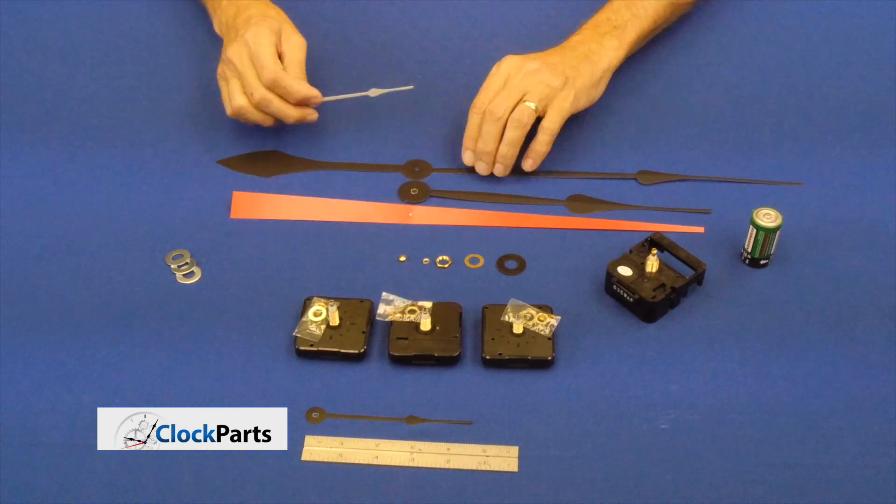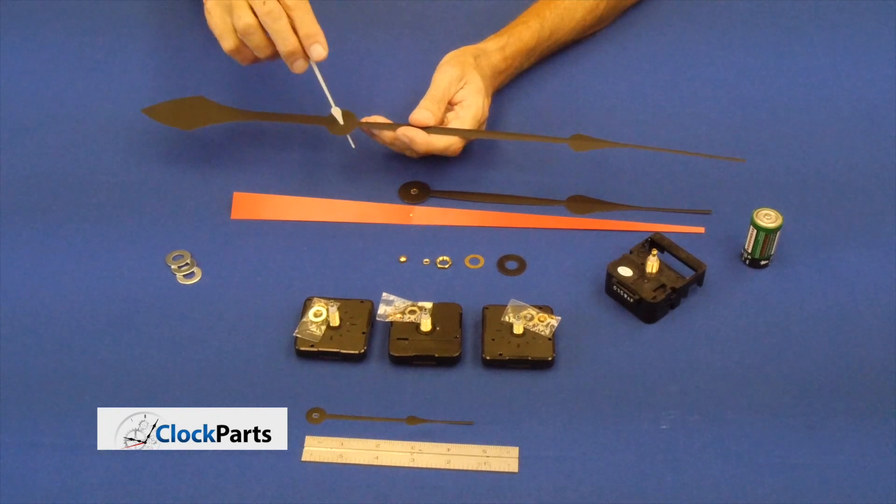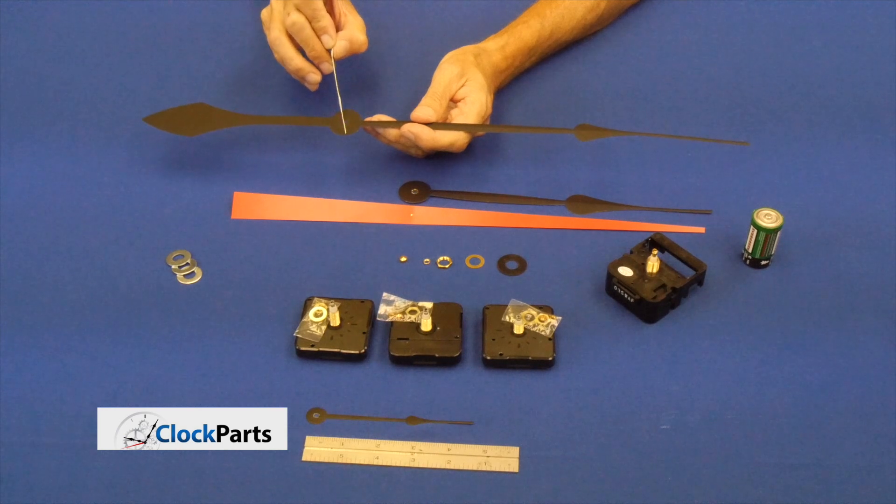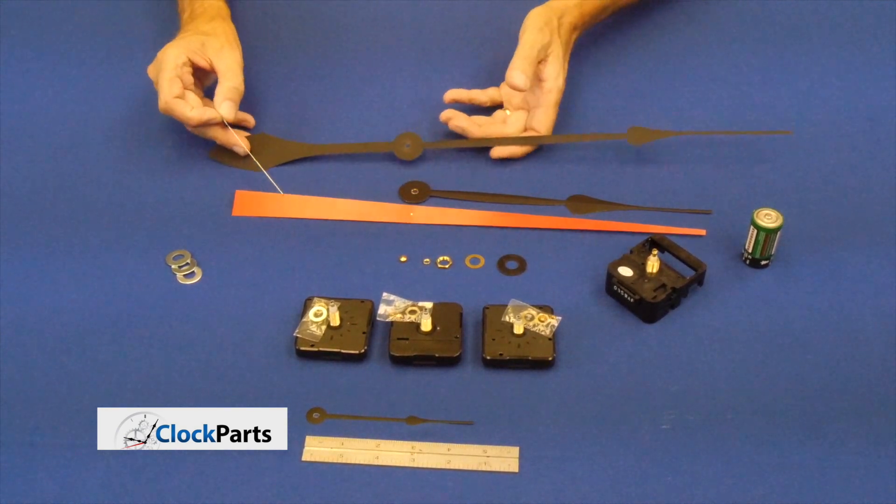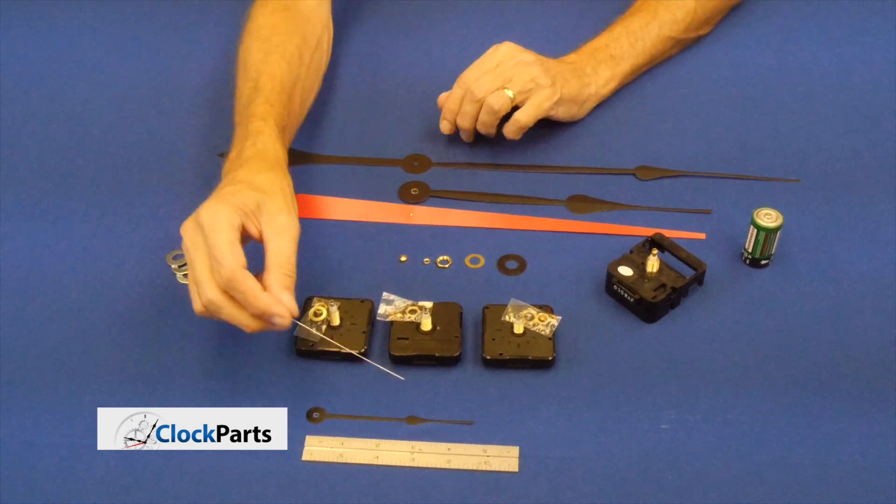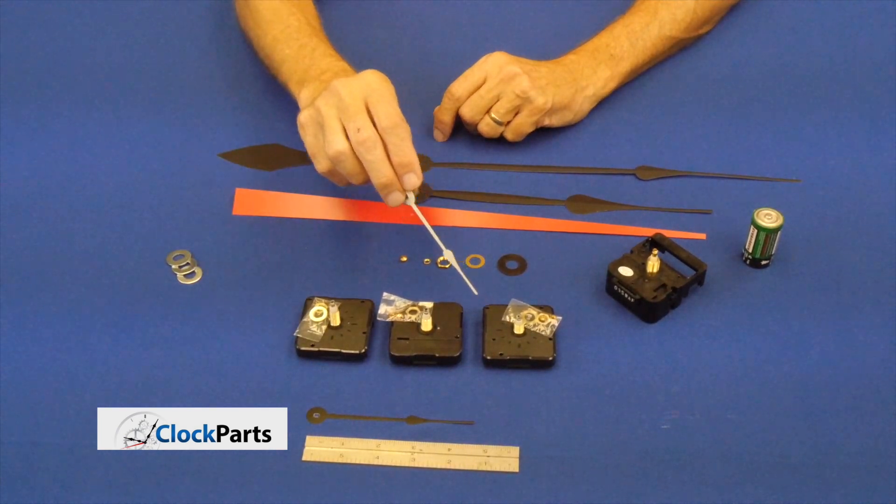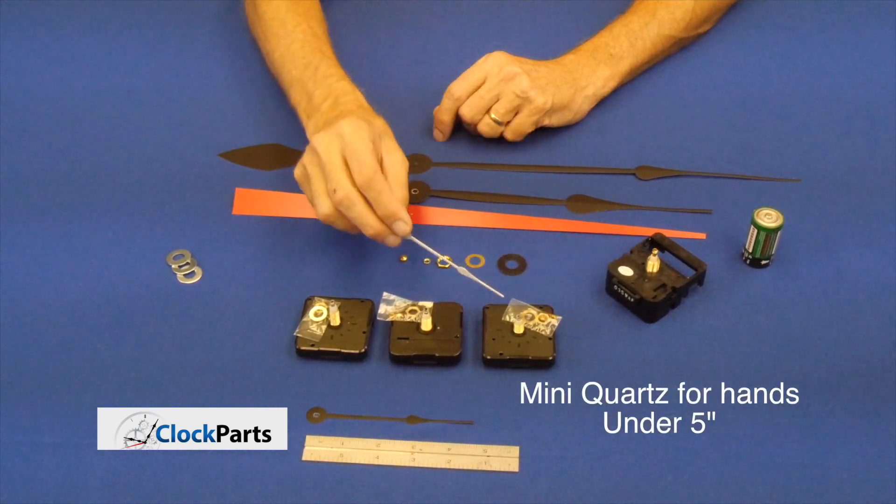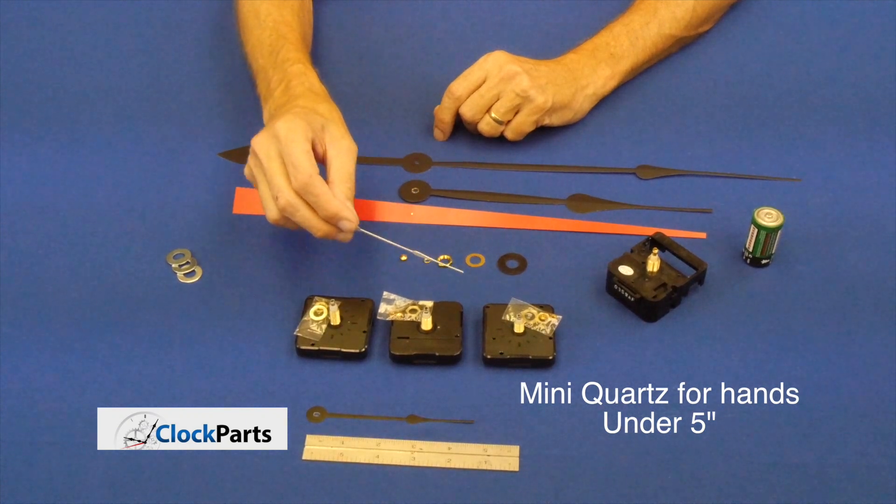No matter what size the hands are, here's a larger hand, we're still going to measure from the mounting hole to the tip. We're not concerned with the part behind the mounting hole, the tail part of the clock hand. So in this case, this clock hand is under five inches. We can use a mini quartz motor. We don't have to use a high torque motor. The mini quartz motor will drive hands up to five inches.